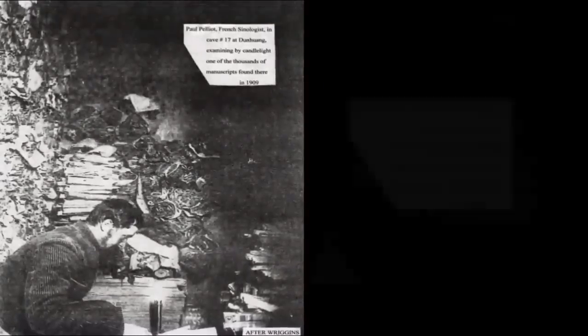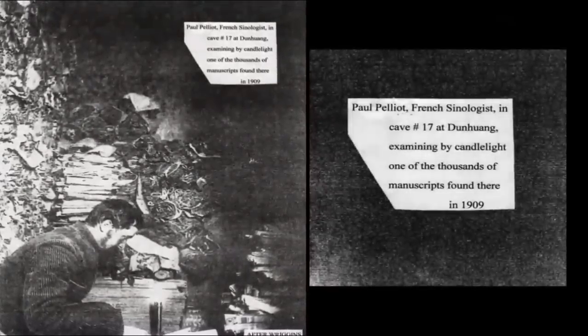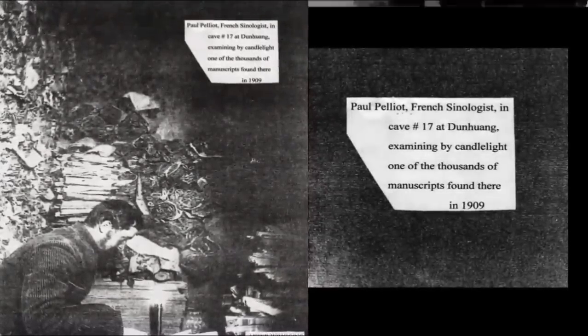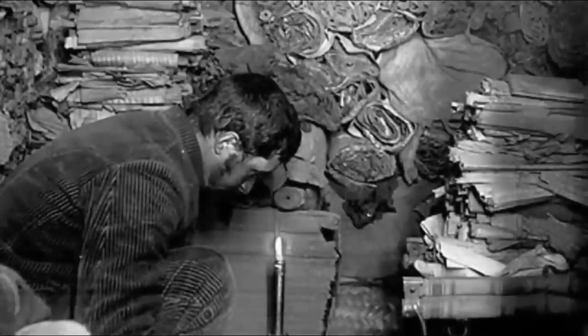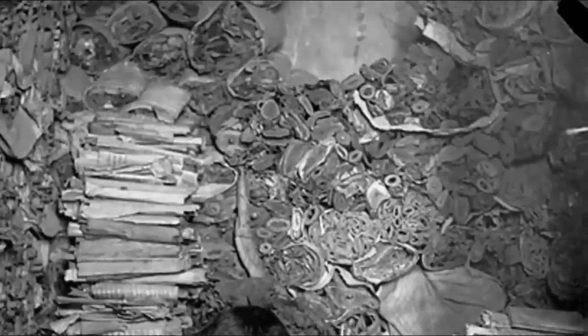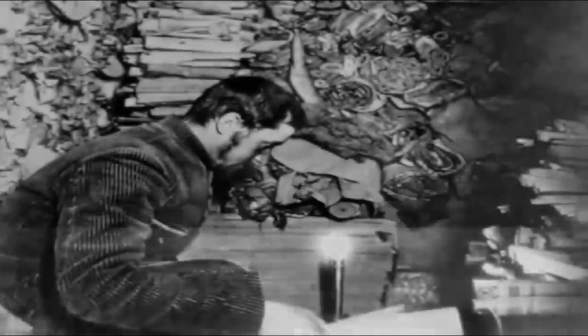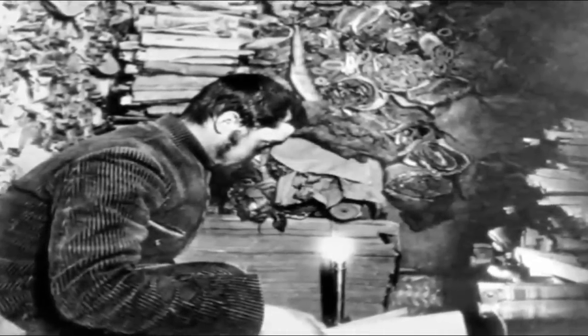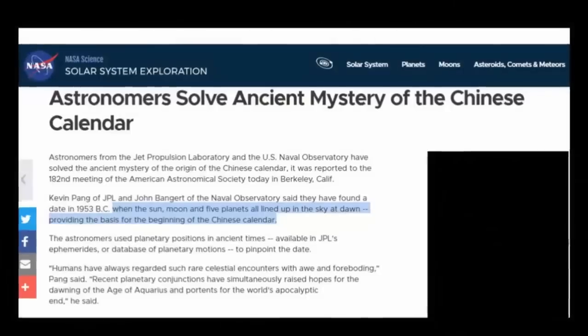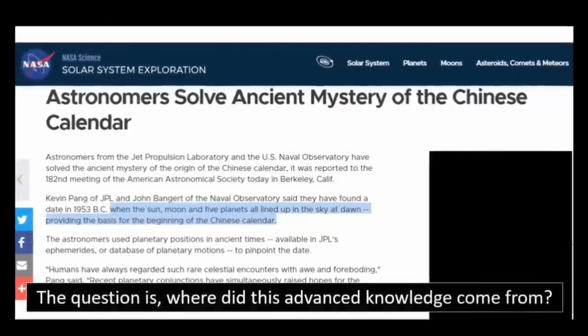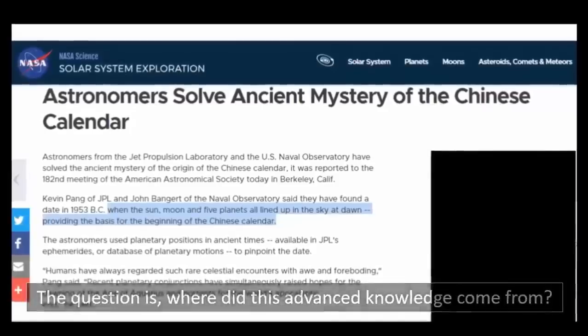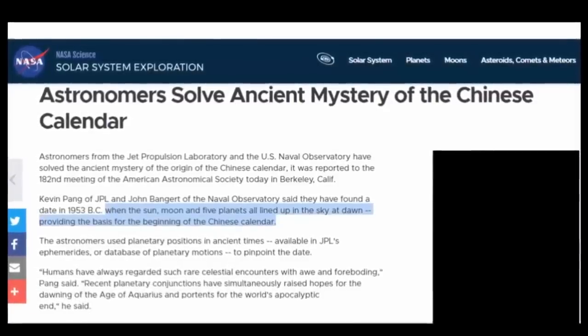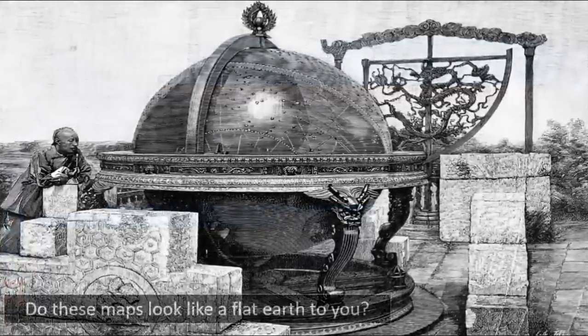Not only proving that, although the Chinese are academically claimed to have believed the world was flat at the time, the star charts prove beyond doubt that they had knowledge of constellations from around the globe. The academic explanation for this is that, although the Chinese supposedly presumed the world was flat, they somehow assumed that the heavens were somehow spherical, which to me just seems like a desperate attempt to discredit such manuscripts' true origins.